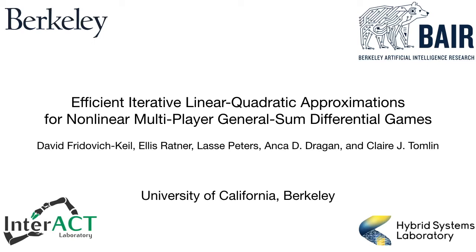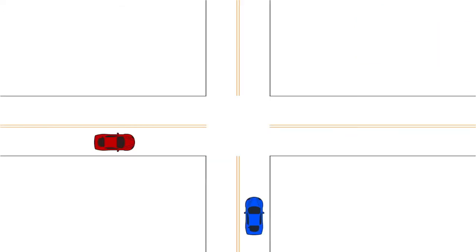This video presents our paper titled Efficient Iterative Linear Quadratic Approximations for Non-Linear Multiplayer General Sum Differential Games. Many problems in robotics involve multiple decision-making agents. To operate efficiently, each agent must reason about how each of its decisions will impact everyone else.